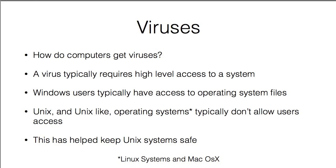One reason Windows is typically more targeted than other systems has to do with how Windows handles permissions. Most people's computers are set up so they run as a high-level user, giving access to a lot of system files and areas where viruses like to hide. Unix and Unix-like operating systems typically don't have this problem because they don't allow users access to vital areas. On a Mac, when you install software it asks for your password — Unix systems work the same way. More modern versions of Windows do something very similar, so they're becoming less targeted.